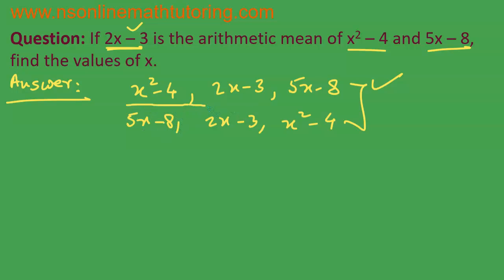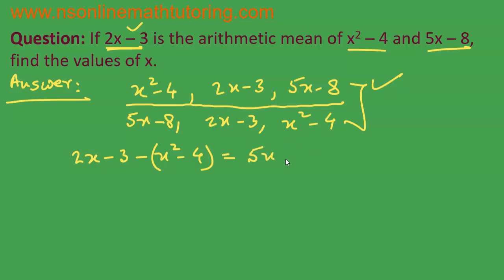Since these are three consecutive terms of an arithmetic sequence, there should be a common difference. If we take the first two terms, the common difference is 2x minus 3 minus (x squared minus 4). And if we take the last two terms, the common difference is 5x minus 8 minus (2x minus 3). We equate these two expressions because each equals the common difference.